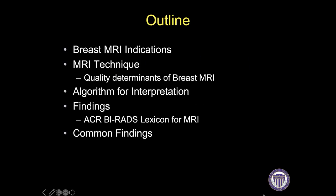We are first going to review indications for obtaining a breast MRI, followed by MRI technique, and then briefly go over one algorithm for interpreting these exams. In the second portion, we will review the different types of findings with an emphasis on the American College of Radiology BIRADS lexicon for MRI. Finally, we will go over some findings and cases that we commonly see in practice.